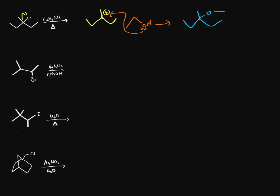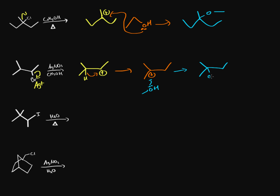The second example uses silver nitrate and methanol. Silver nitrate forces an SN1 or E1 mechanism — it forces a carbocation by making bromine leave and bond with silver. We get a secondary carbocation, but there's a tertiary carbon adjacent. A hydride shift moves that hydrogen over, giving a carbocation on a tertiary carbon. Methanol then attacks, and another methanol molecule removes the hydrogen from oxygen, giving the final product.